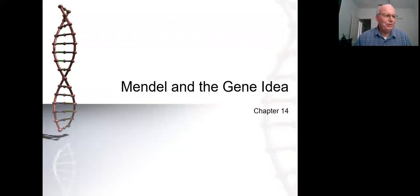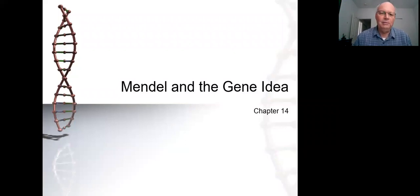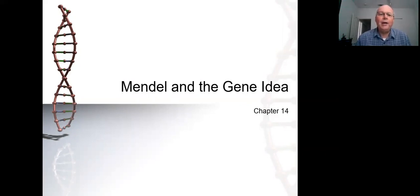This is chapter 14, which is the beginning of our look at genetics and inheritance. And that means we have to start with the work of one man, Gregor Mendel, an Austrian monk. If anyone deserves the title of the father of modern genetics, it would have to be Mendel.